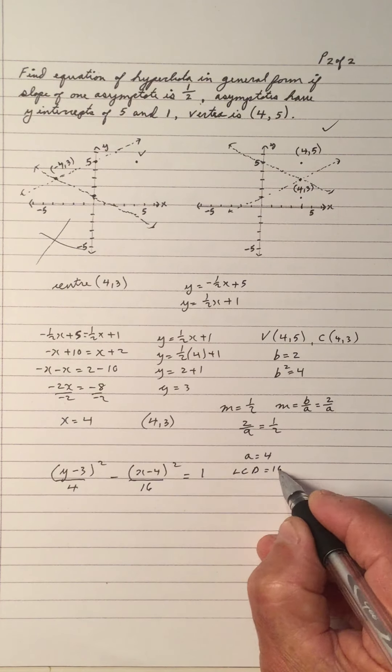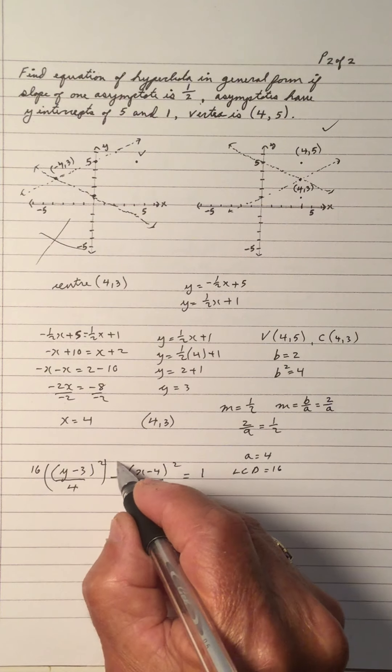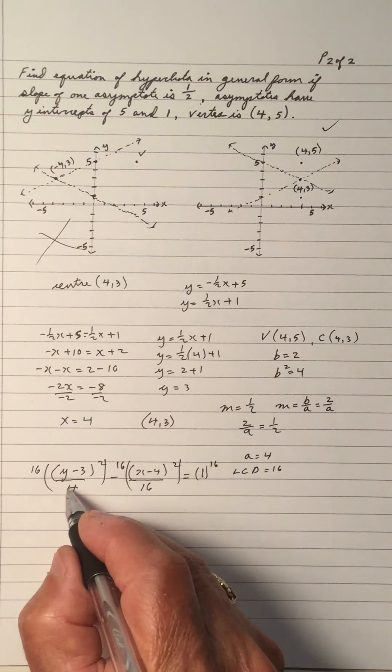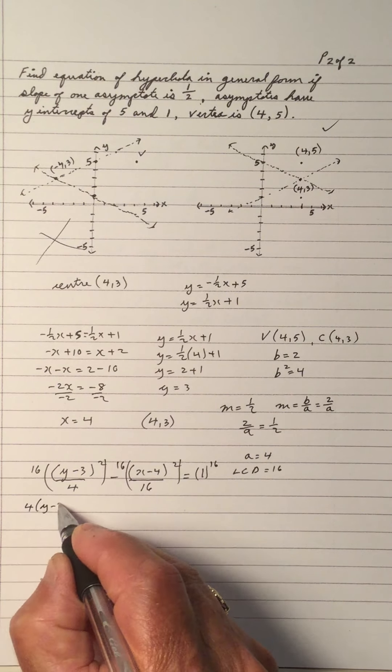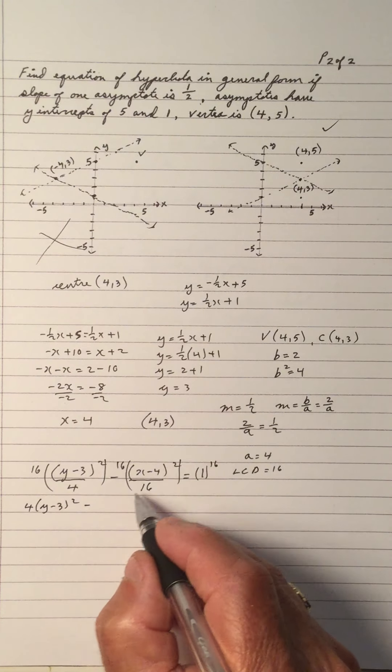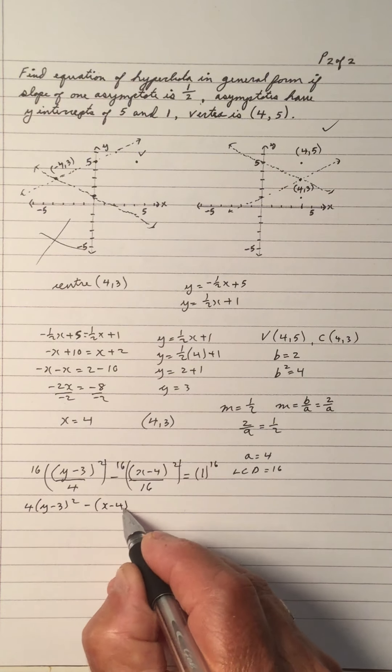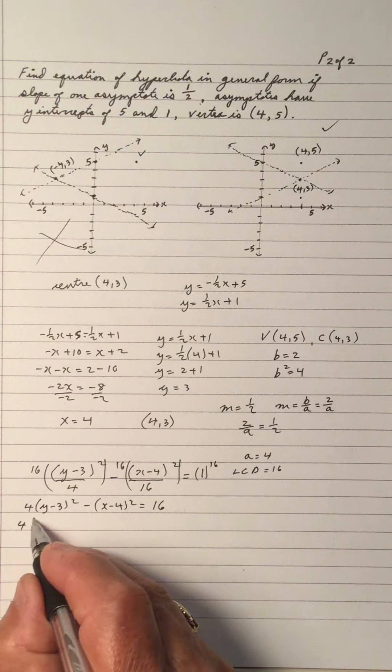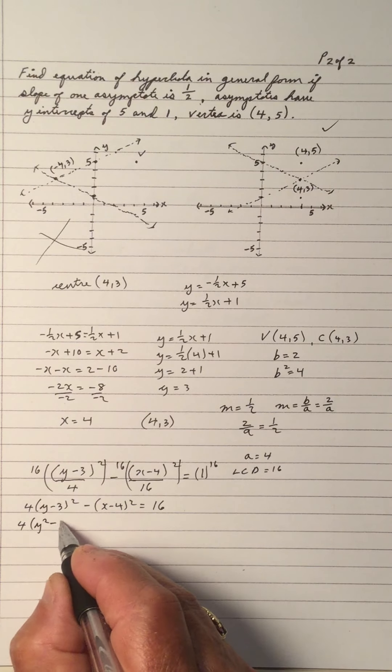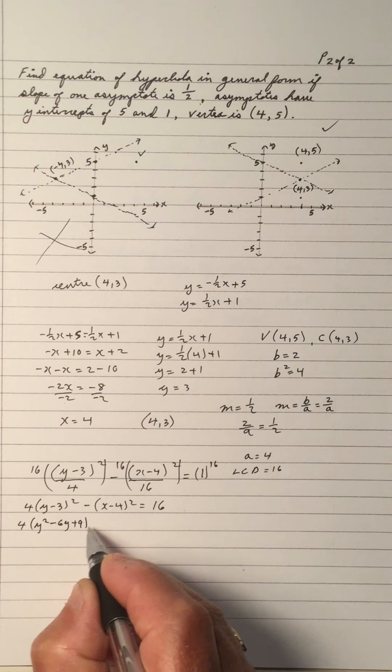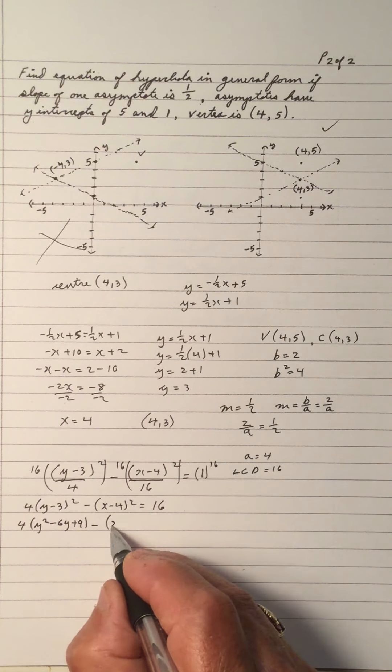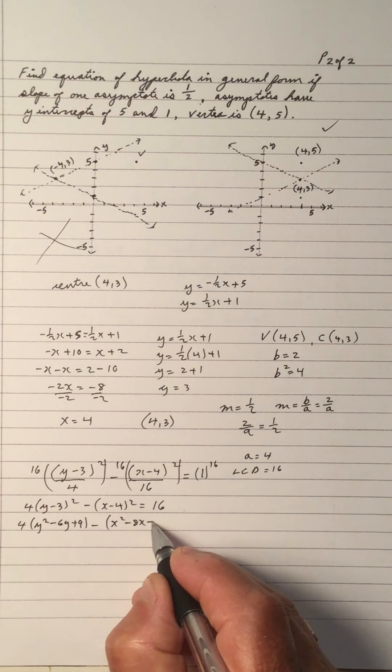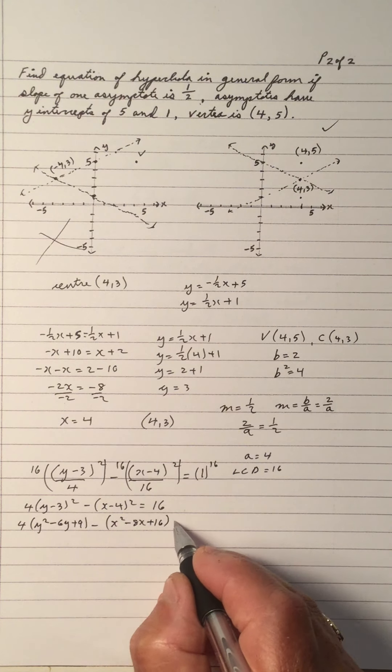So we'll work that out to be the general form. The LCD is 16, so we multiply by 16. And we have no fractions. So 4 and 16 goes 4, so we get 4(y minus 3) squared. 16 to 16 goes 1, so we get (x minus 4) squared. 1 times 16 is 16. You square first, so we get 4(y squared minus 6y plus 9), minus (x squared minus 8x plus 16) equals 16.